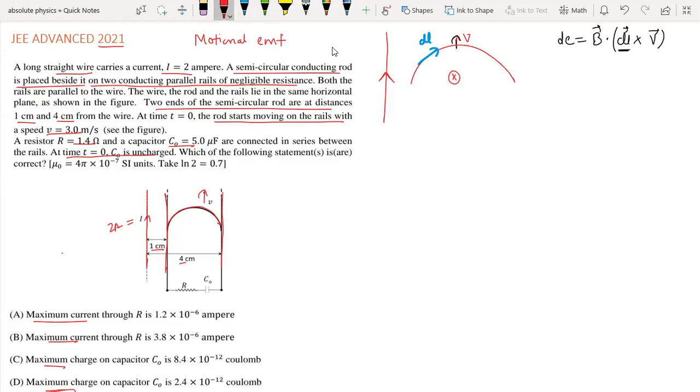Now I will show you how to do this. The EMF equals B·(v×dl). Taking dl as dx i-cap plus dy j-cap, and velocity as v j-cap. When we take the cross product, i-cap cross j-cap equals k-cap.